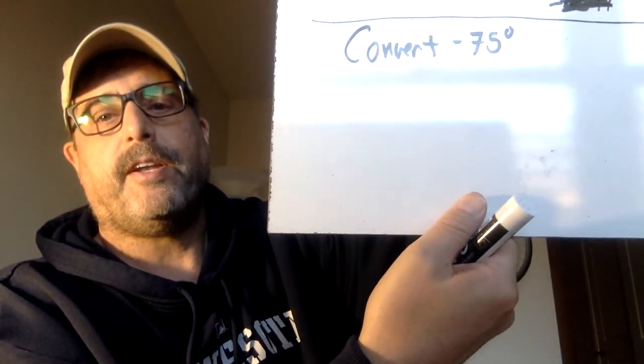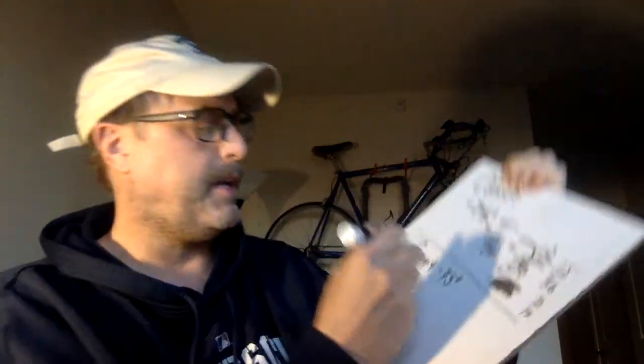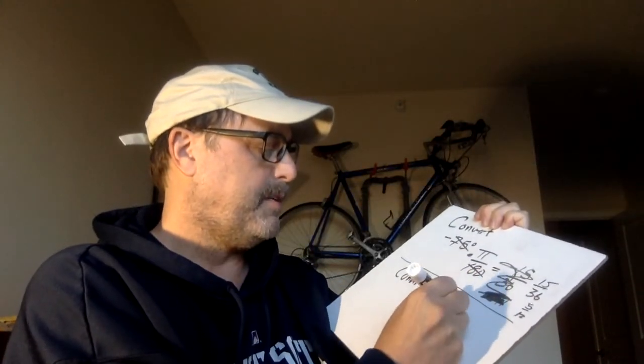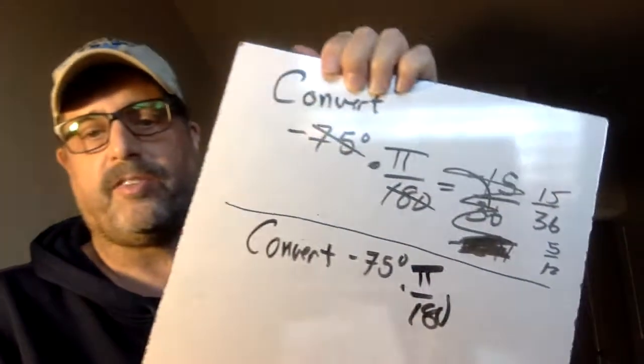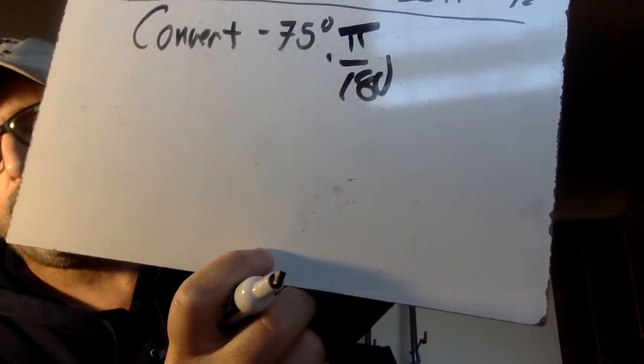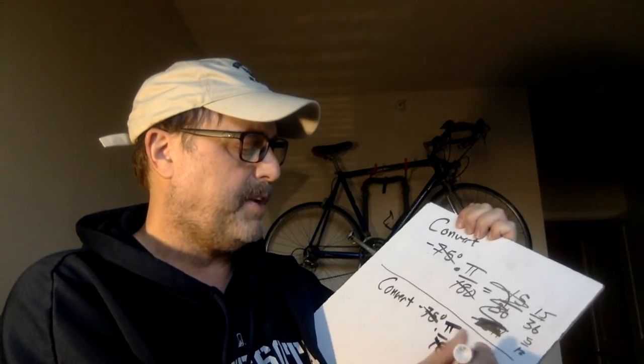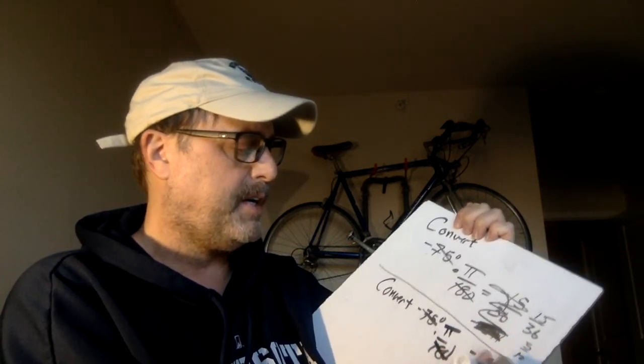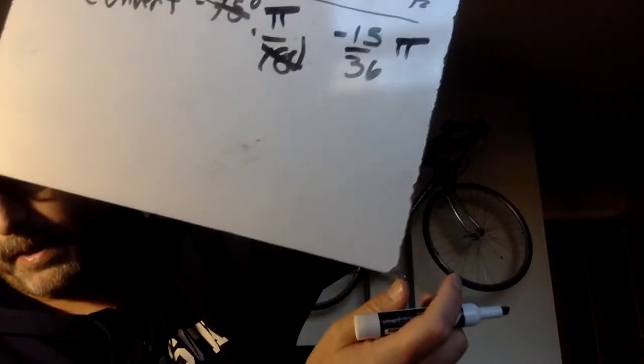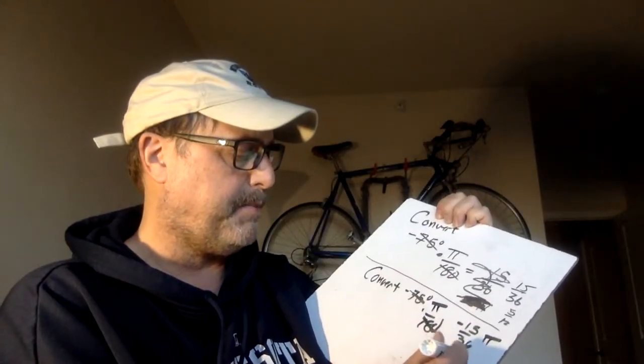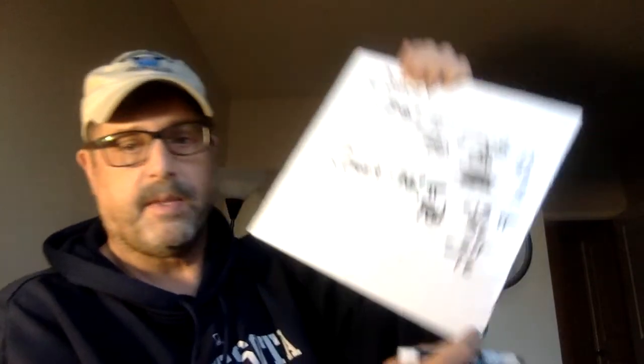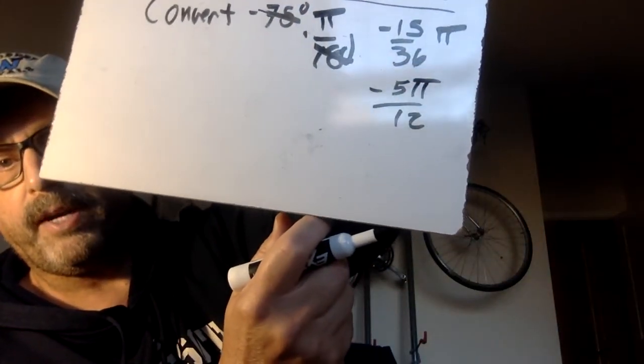And I will be converting negative 75 degrees by taking it times pi over 180. And yes, this is taking two. I messed up just a minute ago. And five goes into both of these and leaves negative 15 over 36 pi. And three goes into both of those and we get negative 5 pi over 12. We have done that before. We need to do that again. That is not the main topic of this lesson.